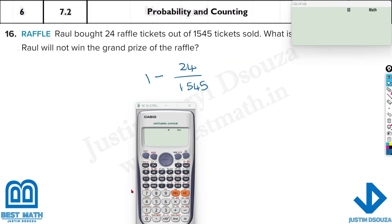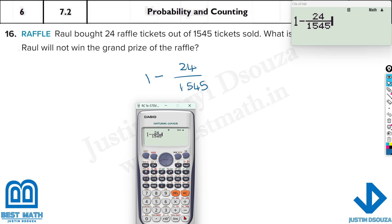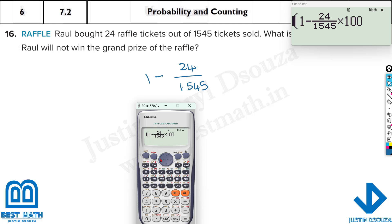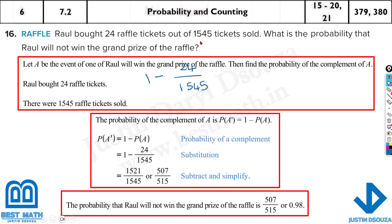Let's take our calculators and solve. We type 1 minus 24 divided by 1,545. The answer is 0.98 — but you need to put brackets if entering this directly as an equation, or once you get the answer, multiply by 100. It's 98.44% chance of not winning, because there are so many tickets and only 24 were bought by Roll. So 98% chance he will not win; less than 2% chance he will win.